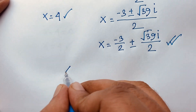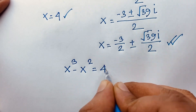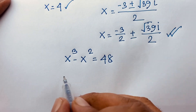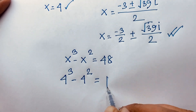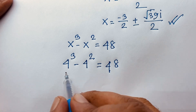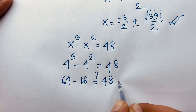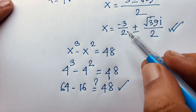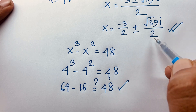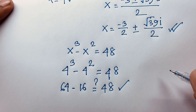Let's check our answer: x to the power 3 minus x to the power 2 equals 48. With x equals 4: 4 to the power 3 minus 4 to the power 2 equals 64 minus 16, which is 48. Left-hand side equals right-hand side, so x equals 4 is our real solution. x equals minus 3 over 2 plus or minus square root 39 i over 2 is a complex solution. Thank you all — if you enjoyed this video, please subscribe to our channel for other interesting videos. Goodbye, take care.